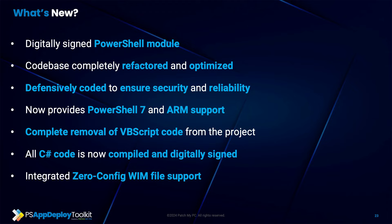It now supports PowerShell 7 and ARM — both ARM32 and ARM64. These are tested targets, tested on macOS with a Parallels VM, and the project works flawlessly. We also have complete removal of VBScript from the project. Microsoft announced the deprecation of VBScript, and it's been a problem because many antivirus and endpoint security vendors aren't permitting VBScript anymore. By removing VBScript entirely and using a different solution, the issue is eliminated. All the C# code that comes with the module is now compiled and digitally signed. Previously we were dynamically compiling C# code and loading it from a temporary location, which wasn't compatible with WDAC. By shipping our own signed compiled DLLs, that issue is now resolved.